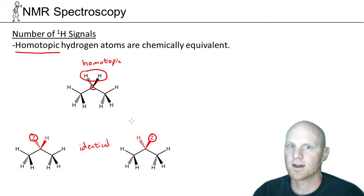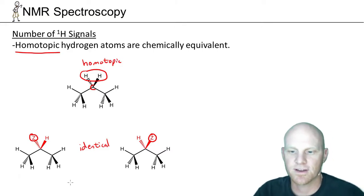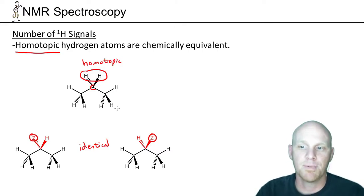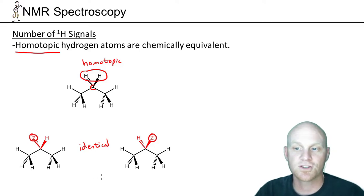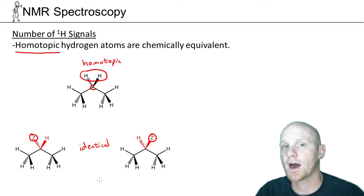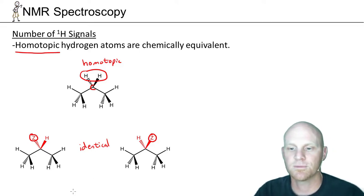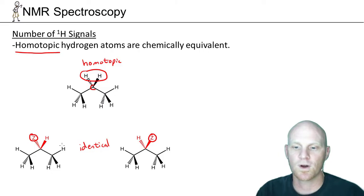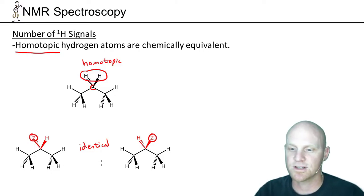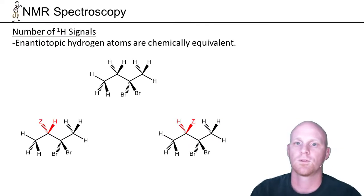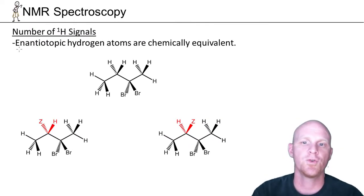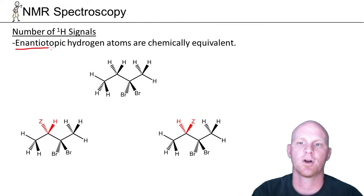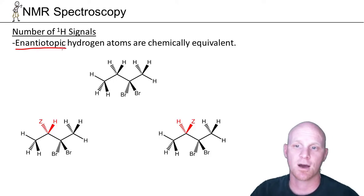It seems like a bit of a crazy process, but if you have two H's on the same carbon as a CH2, they may not end up being homotopic. We'll see some different examples where the two structures drawn by replacing those H's with the letter Z may not be identical. So we've got a new vocab word: enantiotopic.